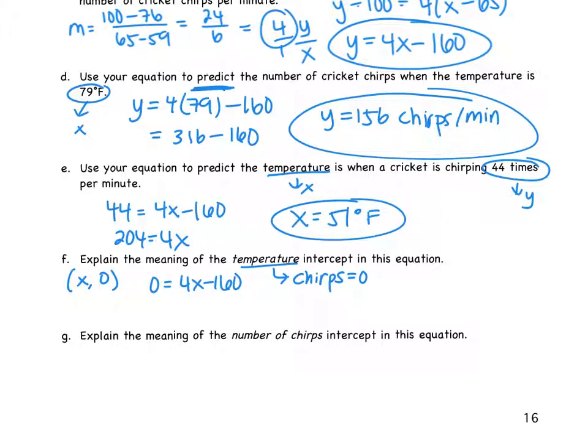Adding that 160 over, we get 160 equals 4X. So X equals 40. So our temperature intercept, then, is the point 40 comma zero. Not only do we have to find it, we have to explain what that point means. So what does that point mean?